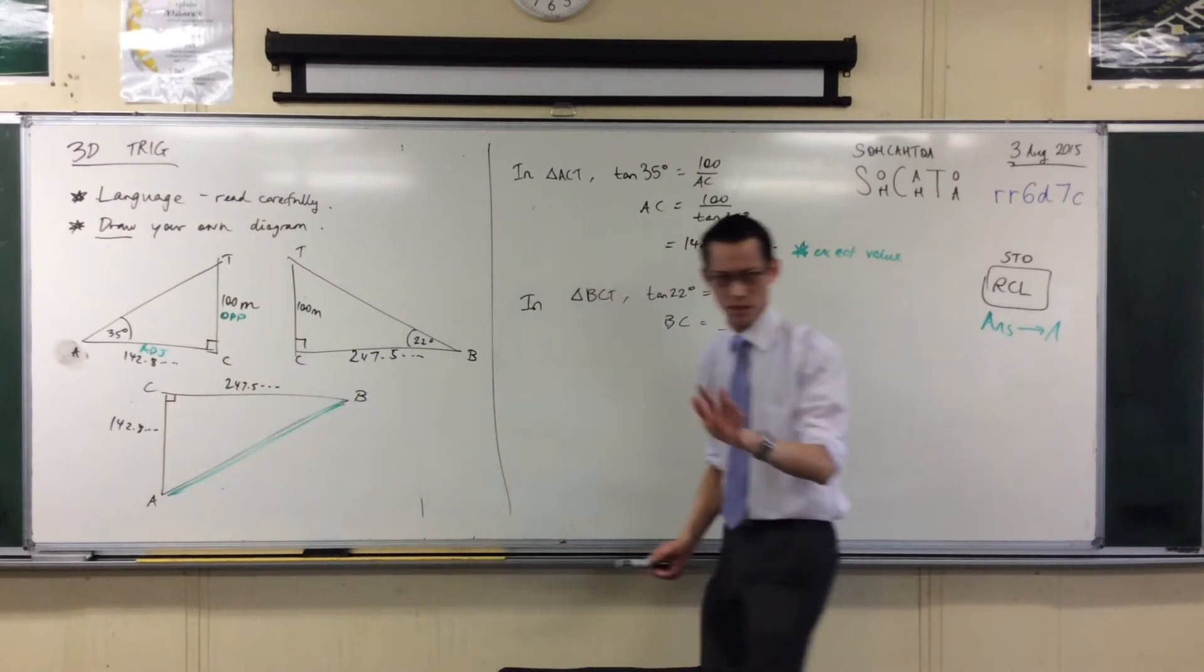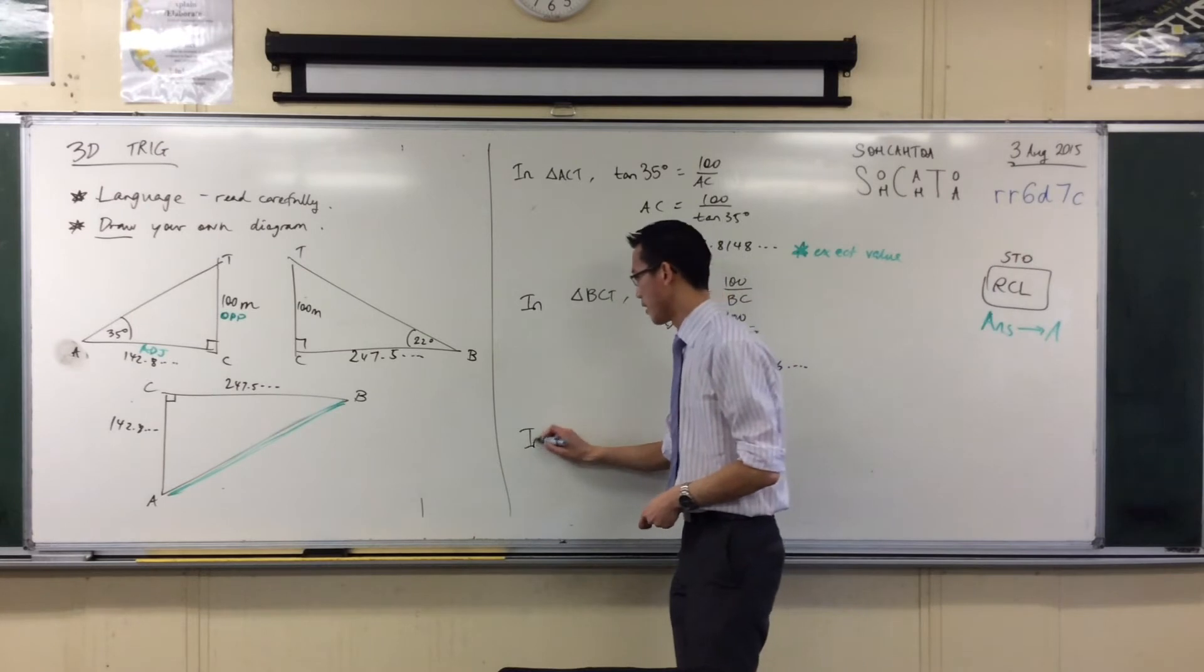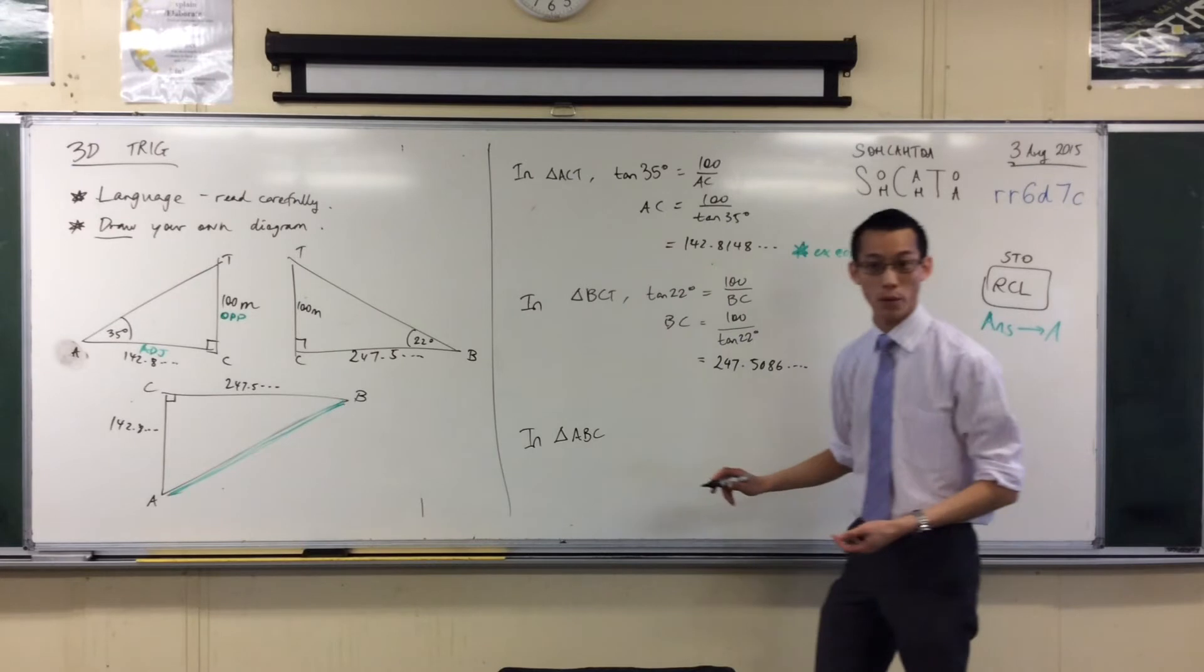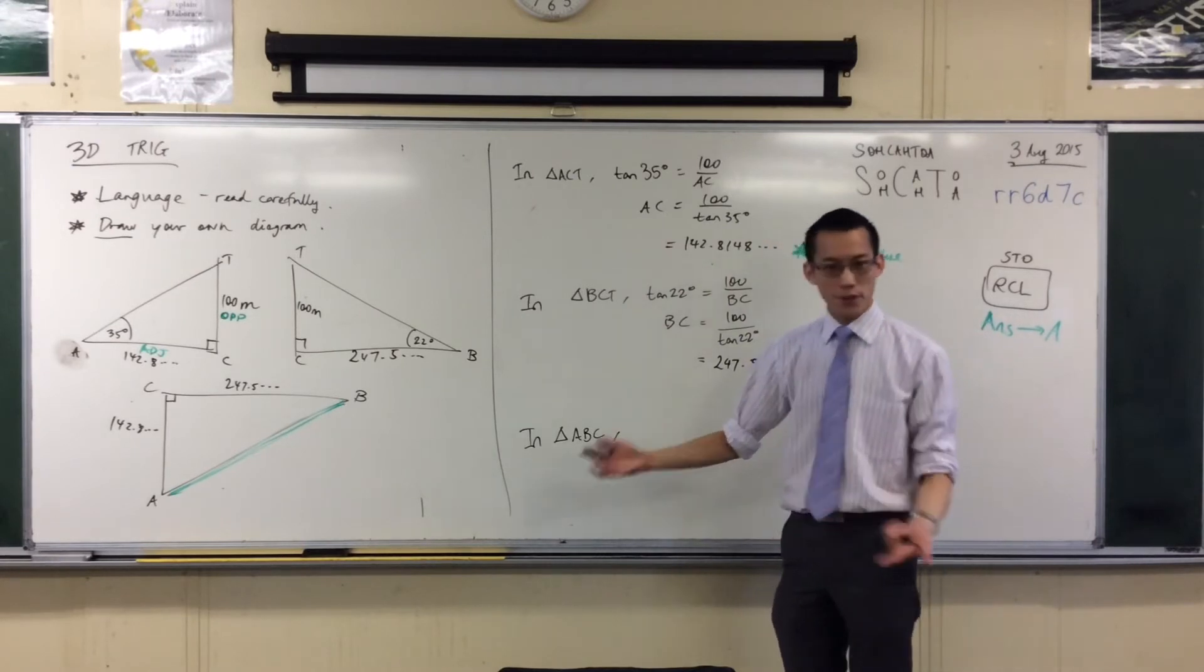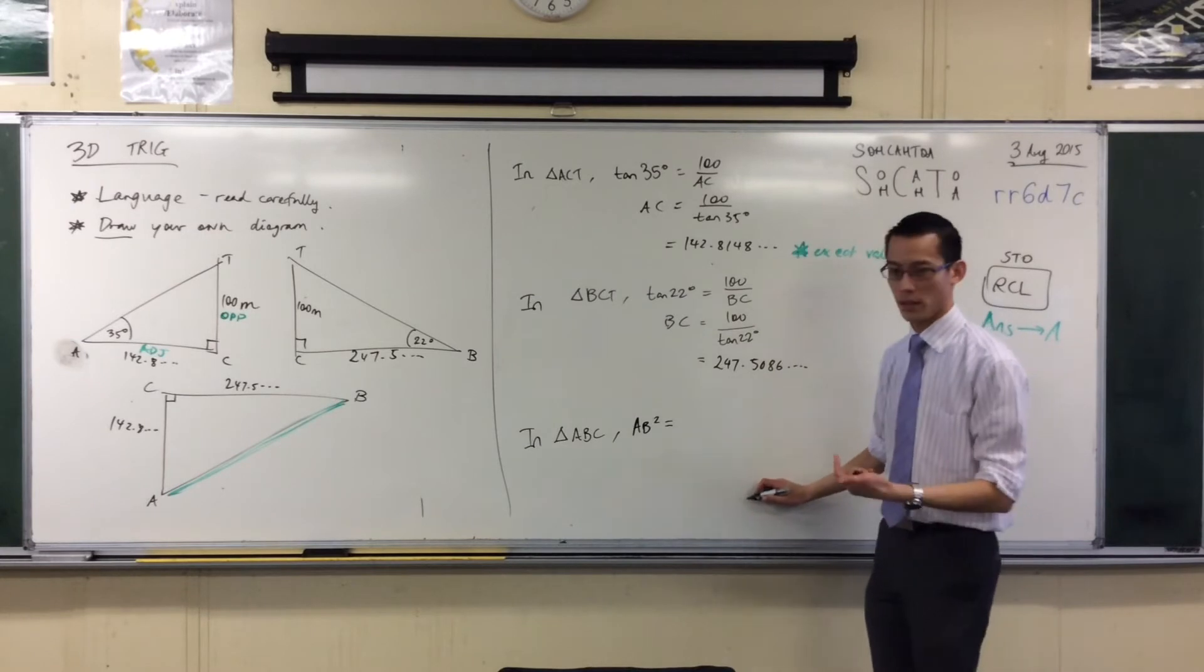You know how to do Pythagoras; you've been doing it for years. Let's tie this up in a neat bow. Again, in a particular triangle—because they're all right-angled, I'd better name what's going on. I'm after AB, so AB² equals... let's name these guys.